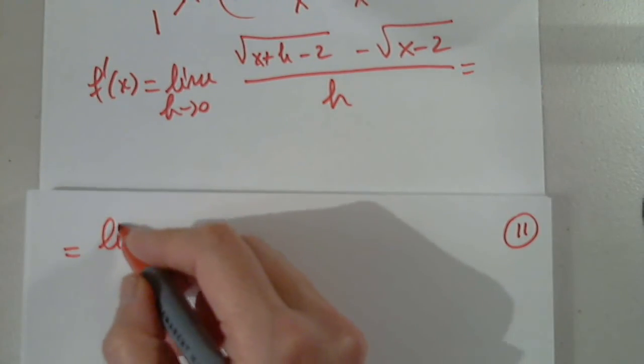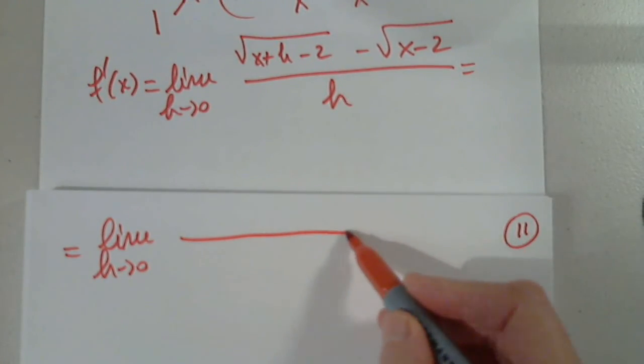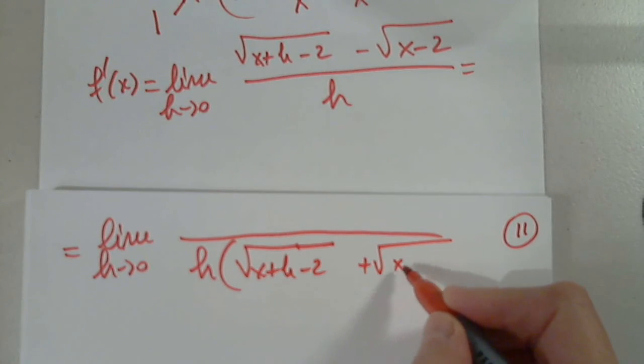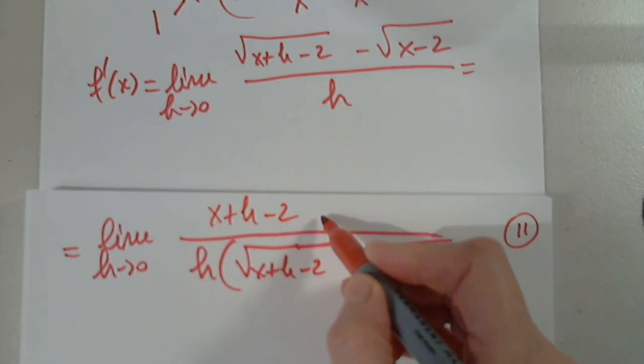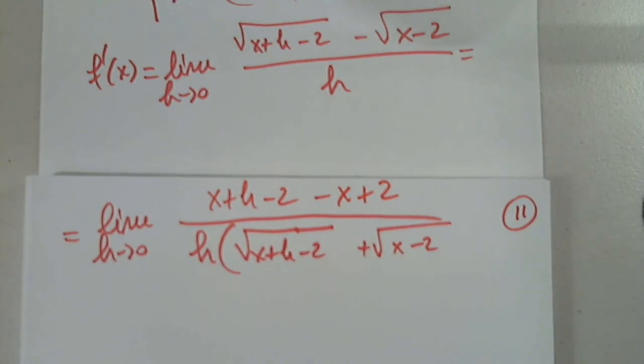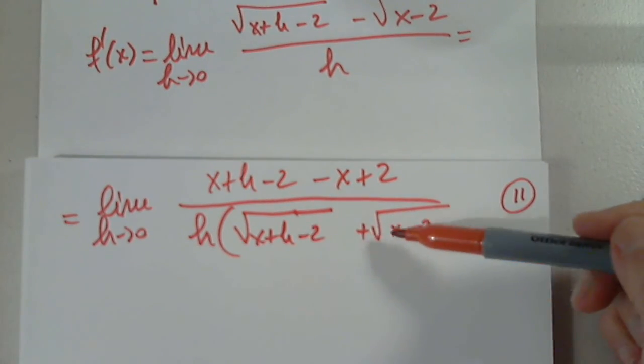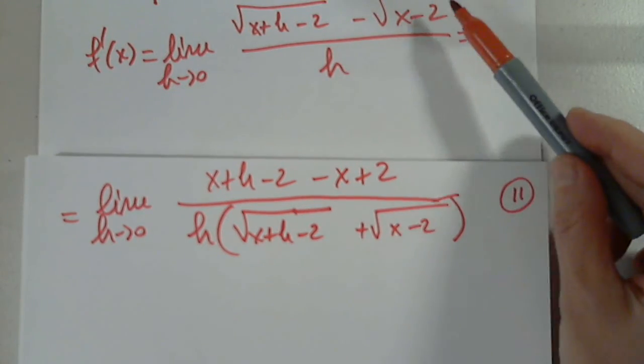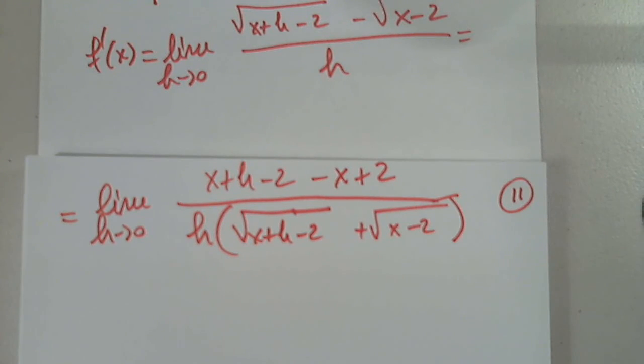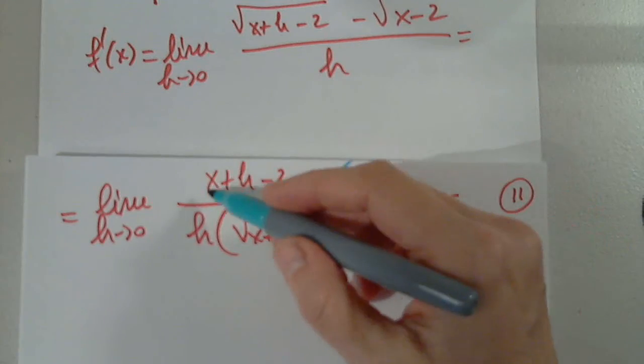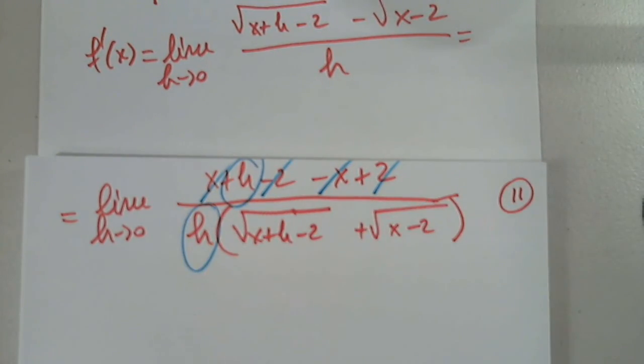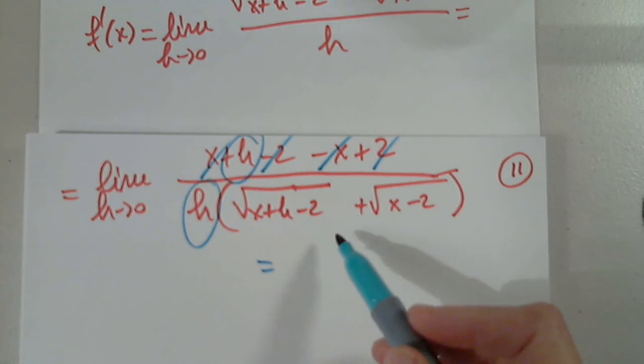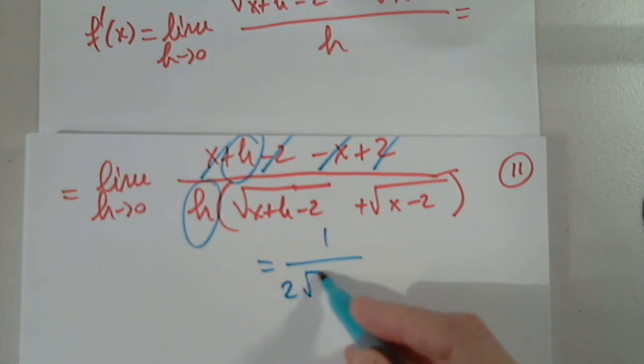We rationalize top and bottom. So then we get limit as h approaches 0. The h in the denominator and the square root of x plus h minus 2 plus the square root of x minus 2. And then we have x plus h minus 2 minus x plus 2. Because we are rationalizing by the conjugate, this square minus this square. But I have to distribute. After I square, I get x minus 2. But I have to distribute negative 1. And this is a difference quotient. And I know that all terms without h must go away. So that this h gets simplified with that h. And when I plug in 0, the numerator goes to 1. And the denominator goes to 2 times the square root of x minus 2.